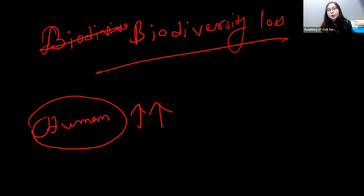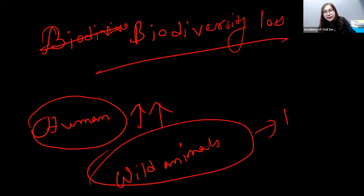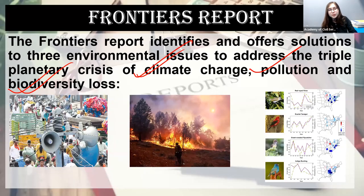On the other hand, think about wild animals who were inhabiting forest areas. What will happen to them? Their population will decrease. So some kind of shifting in population is taking place, and this is what the Frontiers Report has mentioned. Noise pollution is leading to a great disaster, creating problems for different species.